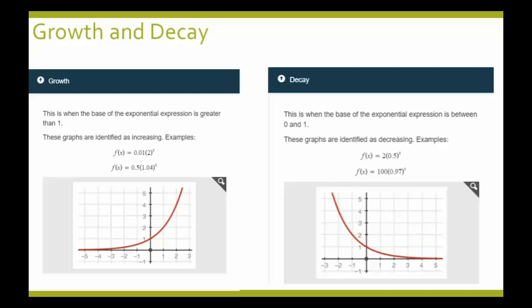Let's look at growth and decay a little closer. When the base of the exponential expression is greater than 1, we are indicating a growth. We have two examples: f of x equals 0.01 times 2 raised to the x power, and f of x equals 0.5 times 1.04 raised to the x power. Both are a growth because the number inside the parentheses is greater than 1.